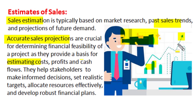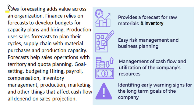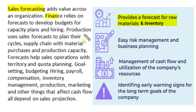The accurate estimate of sales helps stakeholders and investors to make informed decisions. These estimates of sales are used to set realistic targets, to allocate all resources effectively, and to develop a robust financial plan for the project. Appropriate sales forecasting adds value to decision-making all across an organization. Sales forecasting provides a forecast for requirement of raw material, manpower, and inventory management. The finance department relies on these forecasts to develop budgets and decides capacity plans and hiring for project activity.